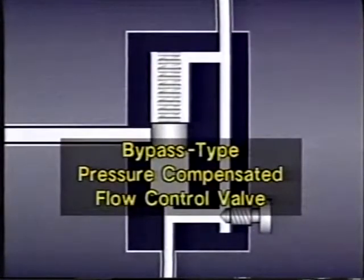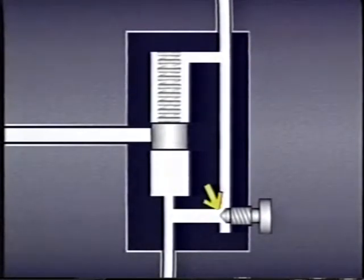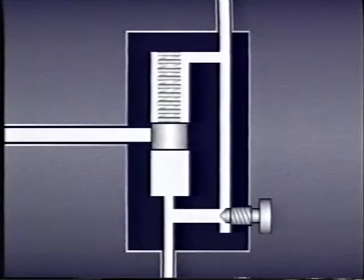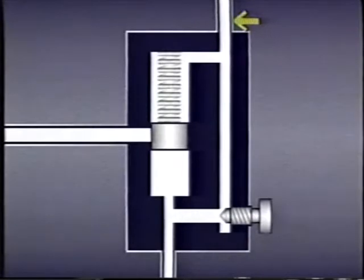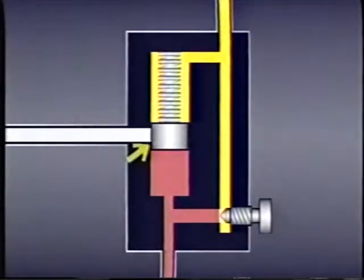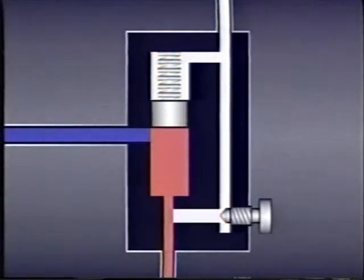Now let's look at the other type of pressure compensated flow control valve: the bypass type. Like the restrictor type, it has a valve body, an inlet and outlet port, a needle valve orifice, a compensator spool, and a spring to bias the spool. However, instead of two pilot passages to compensate for changing pressures, it has one pilot passage and a port to tank. The port to tank compensates for changes in pressure upstream of the valve, while the pilot passage compensates for changes in pressure downstream of the valve. In this type of valve, the compensator spool blocks flow out the tank port until pressure rises high enough to overcome the combined pressures of the spring and the pilot pressure downstream of the needle valve orifice. When that happens, the spool moves and fluid bypasses the orifice, dumping directly to tank.